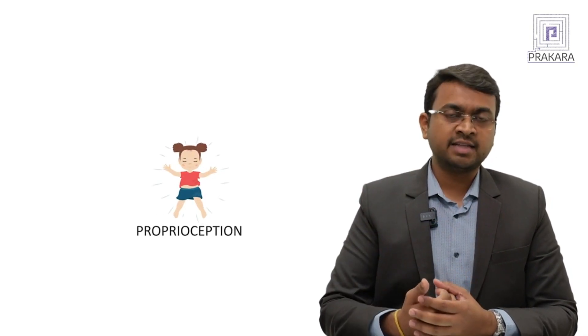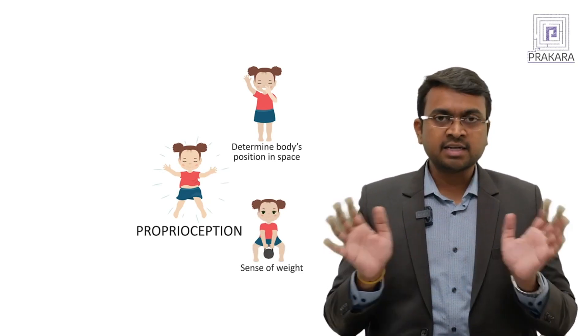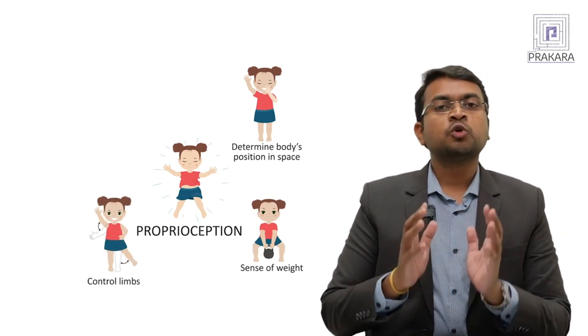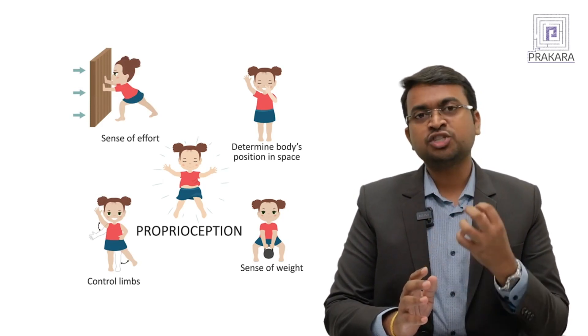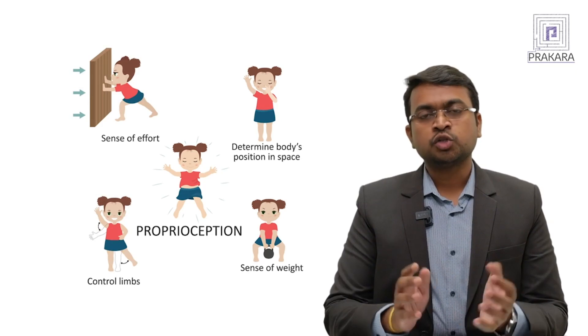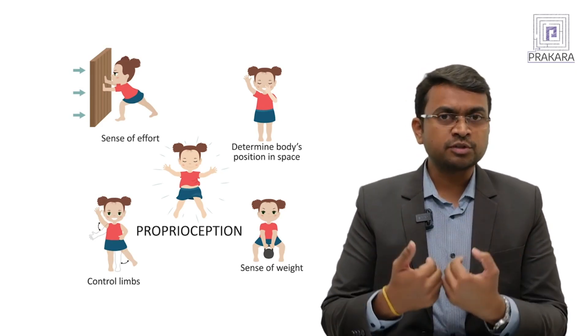So proprioception is a sensation. Proprioceptors are the receptors which generate this information. So proprioception is the awareness of the position of your body in the space.